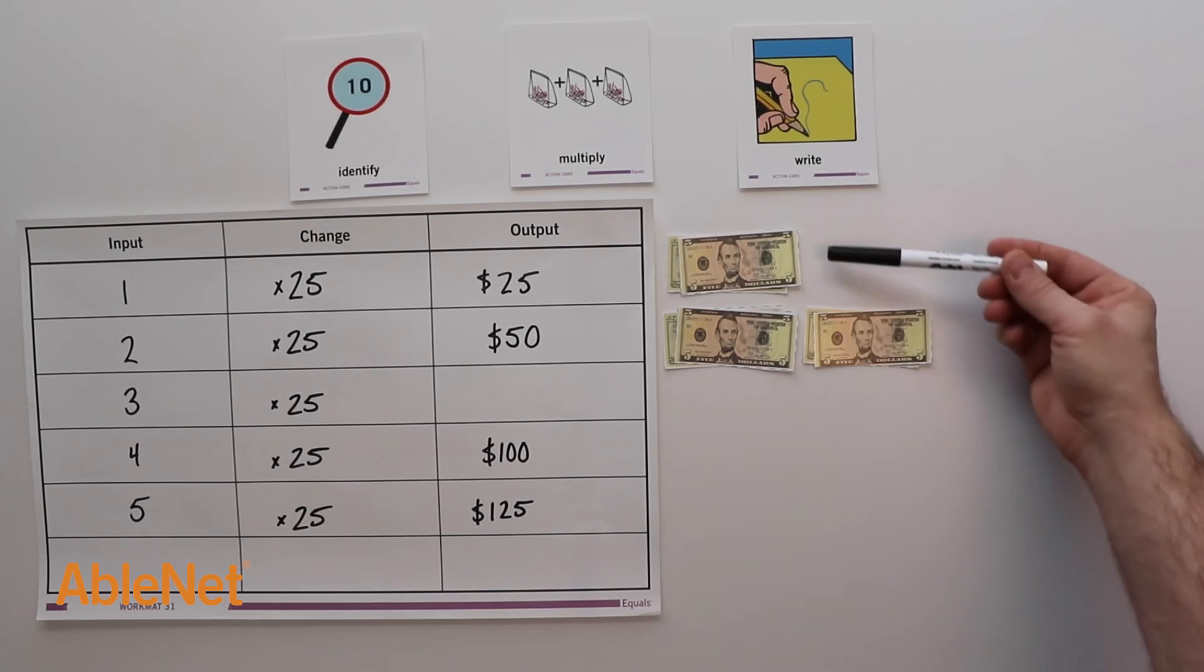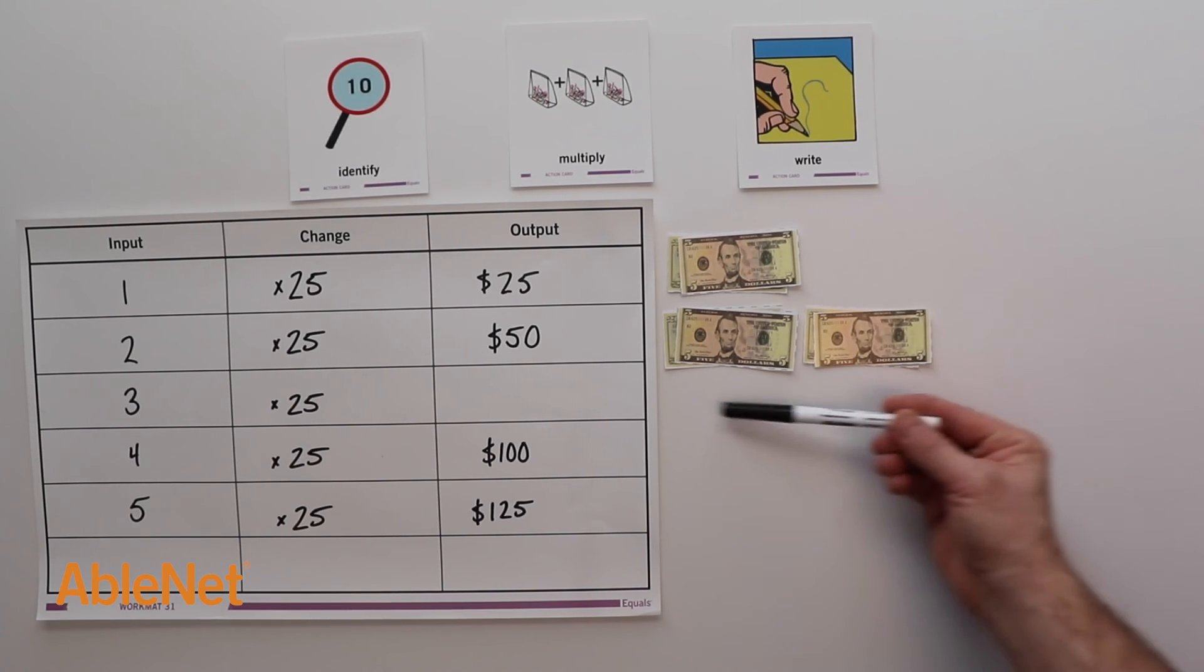The pattern grew by $25. I can add another set of $25 for three cases.